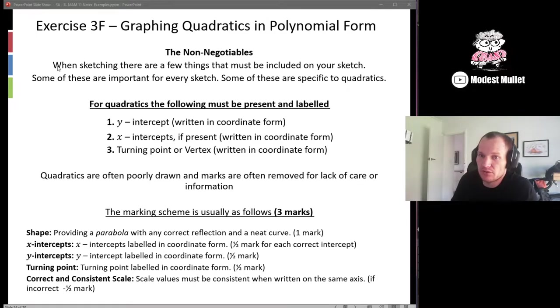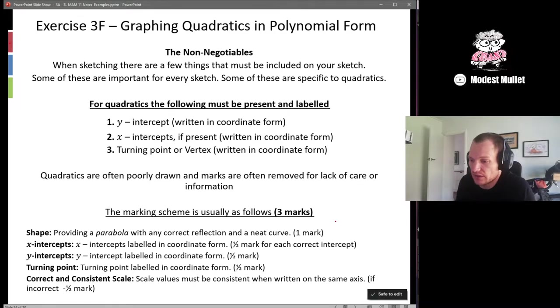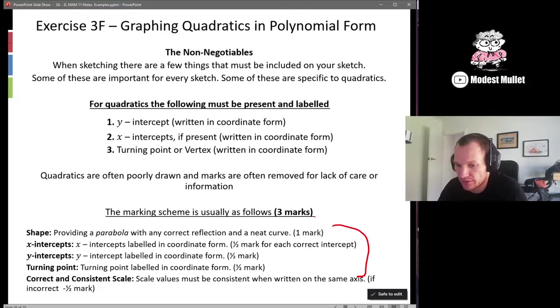The marking scheme that we normally use is as follows. This is how your three marks break down. You'll get three marks for each of these things if they are correct, or you could think about you start with three marks and then you lose each of these marks if they are incorrect.